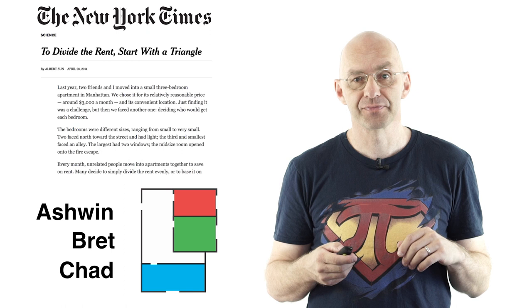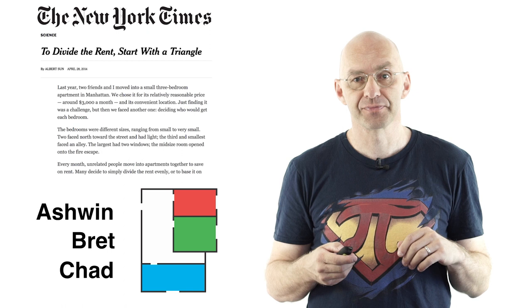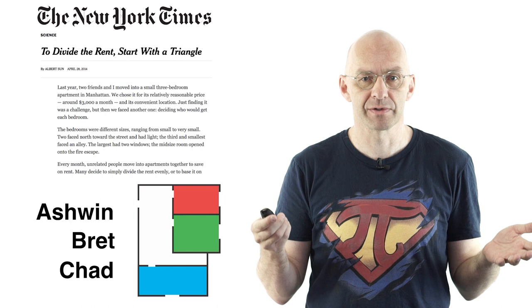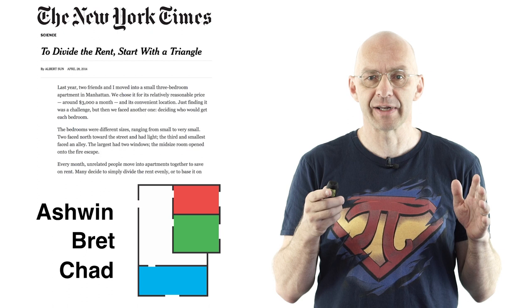It's about a familiar problem. A couple of friends, Ashwin, Brad and Chad want to rent an apartment. Now the rooms are quite different and the friends have different preferences, different ideas about what's worth what. Now is there a way to split the rent and assign the rooms to the friends so that everybody is happy?